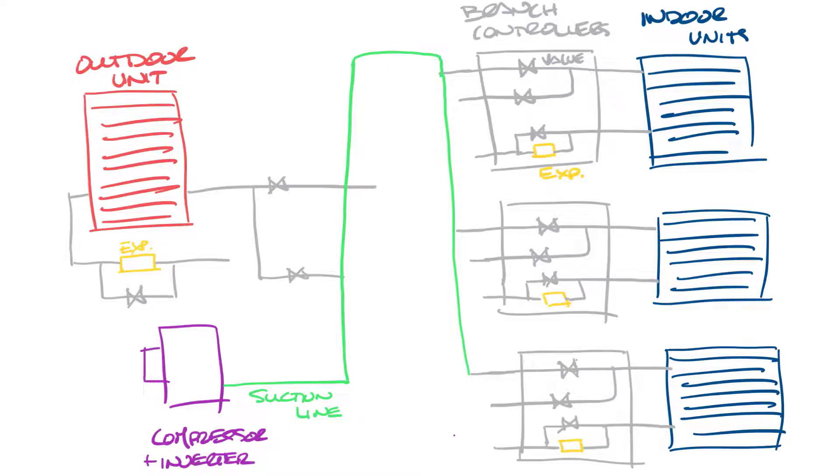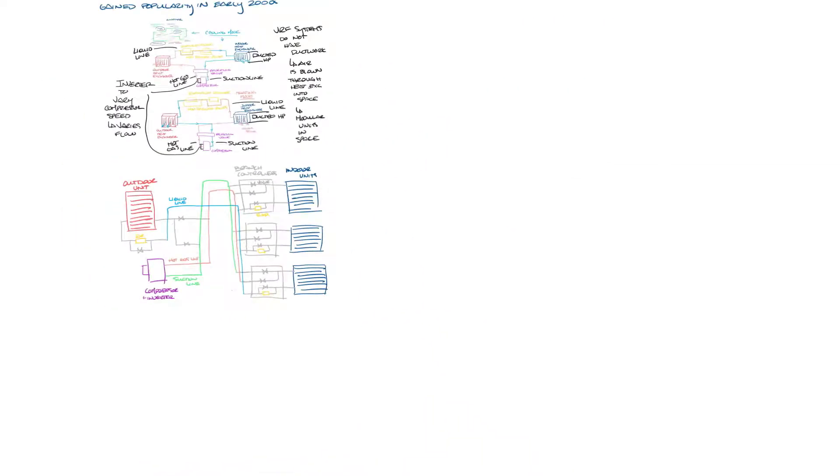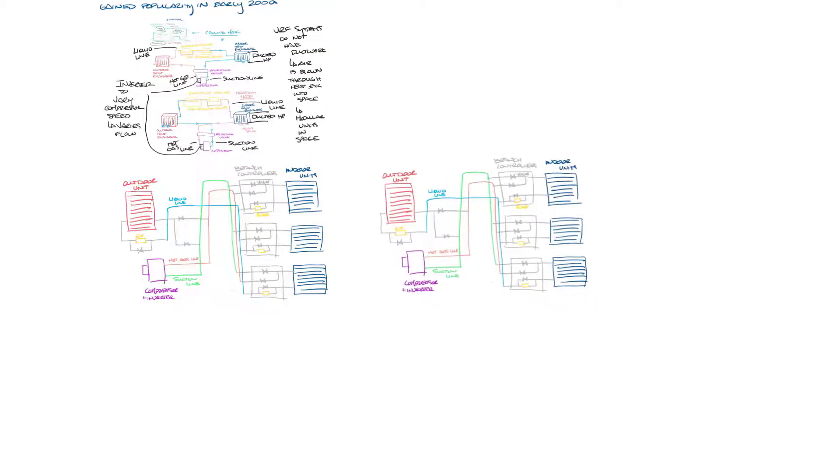Now the second line in the branch controllers, this is the hot gas line. This is going to come out of the compressor. It's also going to connect to the outdoor unit. And then these last three lines are the liquid line and it's going to connect over here to the expansion device. So since that took some time to draw let me make two copies of it to talk about later.